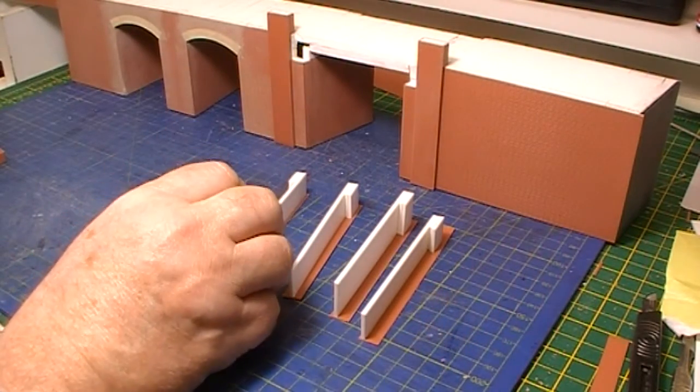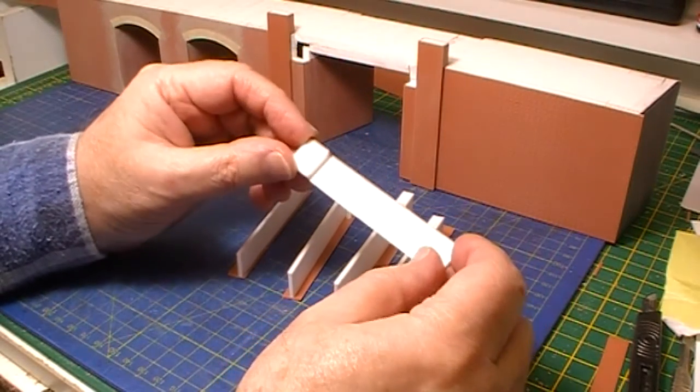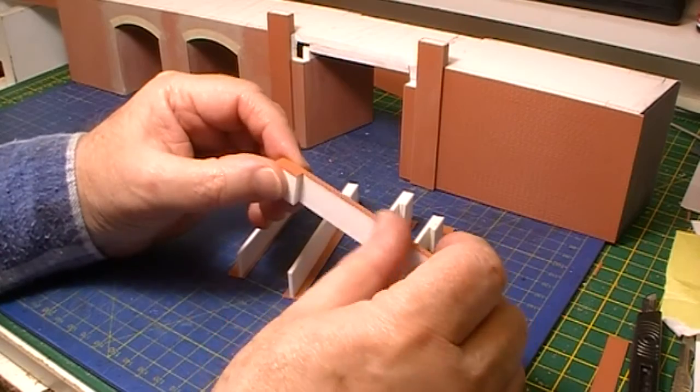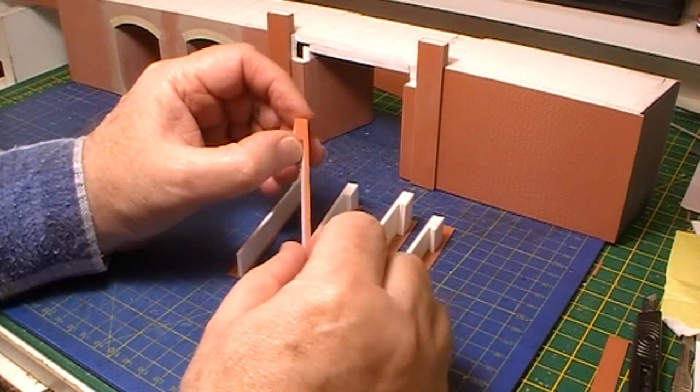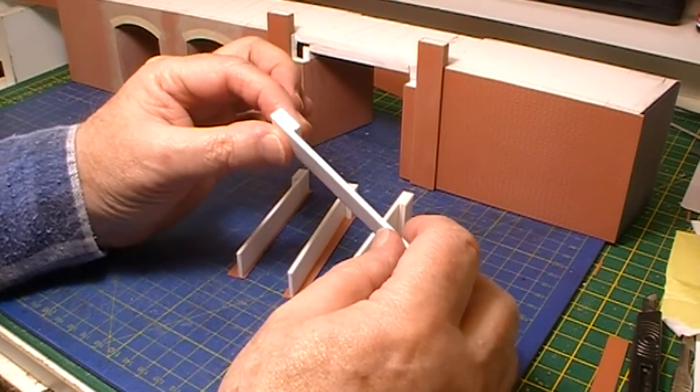Having got those dry, you can then trim them as I have this one. That's just a knife down both sides, cut right through the plasticard, and you're ready to fit the other side.